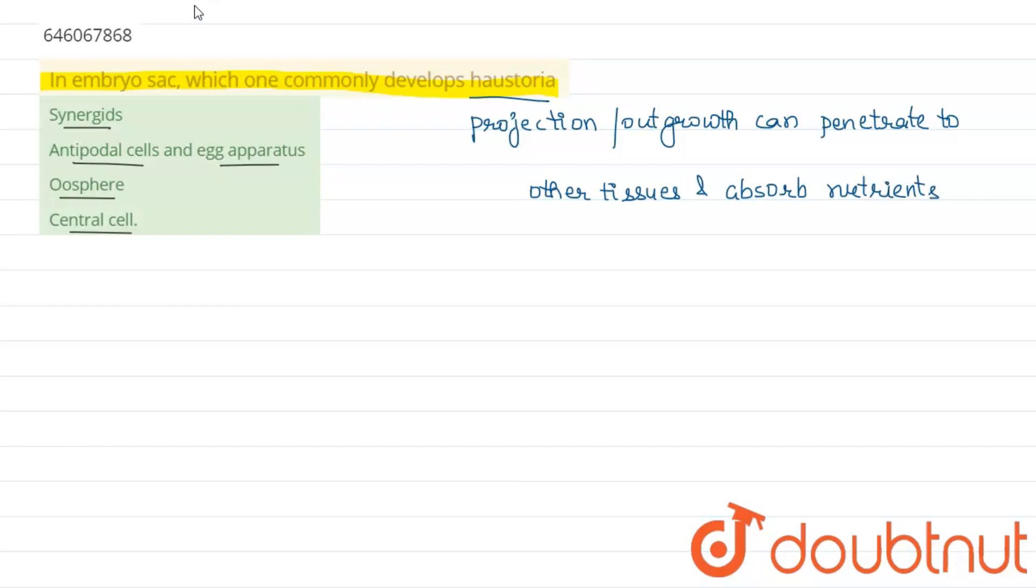Both synergist and antipodal cells may develop haustoria in the embryo sac, but the haustorial behavior of antipodal cell is known in many plants. So you can say that it is developed by the antipodal cells.